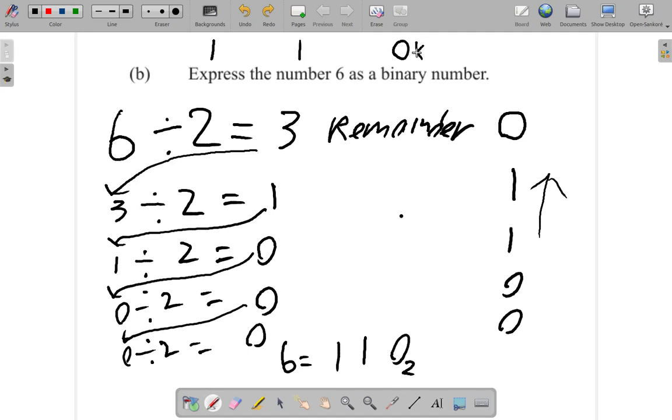The powers of 2 here are 0 times 2 to the 0, plus 1 times 2 to the 1, plus 1 times 2 to the 2.